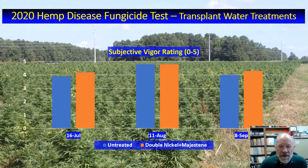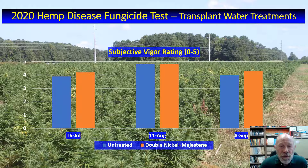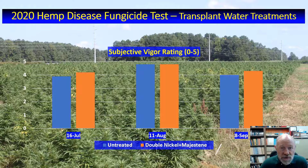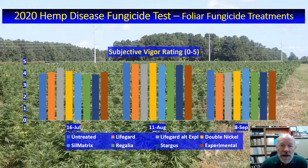We are also rating hemp in this trial for vigor, which is basically plant size and apparent health, on a scale of 0 to 5, where 5 is the best possible plant growth expected for that particular day, and 0 would mean that all plants in a plot are dead. Vigor seemed higher on the 11th of August compared to the 16th of July and 8th of September, but was very similar regardless of what was or wasn't in the transplant water on the 29th of June when the experiment was established.